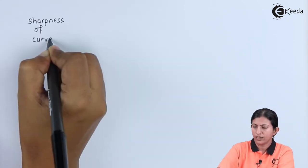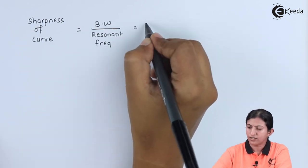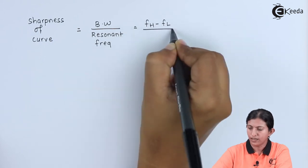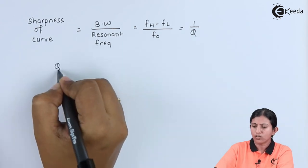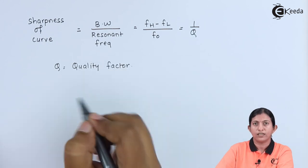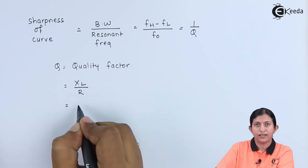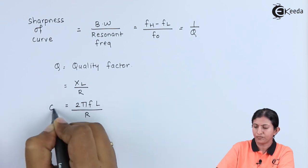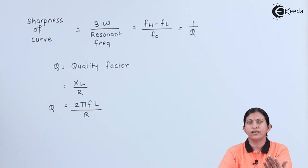The resonance curve should be as sharp as possible, because a sharp curve provides selectivity. The sharpness of the curve is defined as the ratio of the bandwidth to the resonant frequency, where bandwidth is FH − FL and the resonant frequency is F0, which equals 1/Q. Q is called the quality factor. The quality factor is defined as the ratio of inductive reactance to resistance: Q = XL / R = 2πFL / R. The quality factor is important in tuned amplifiers: if Q is high, the selectivity is high; if Q is low, the circuit is less selective.